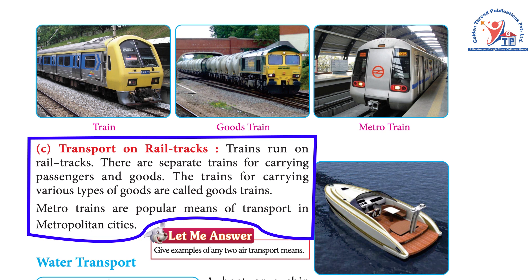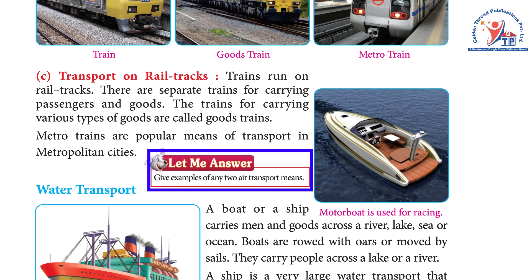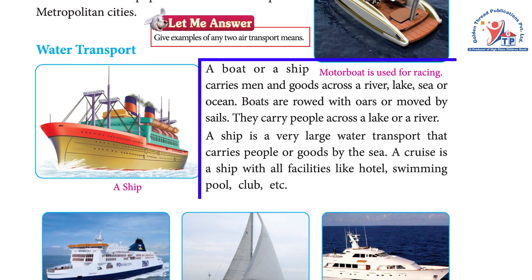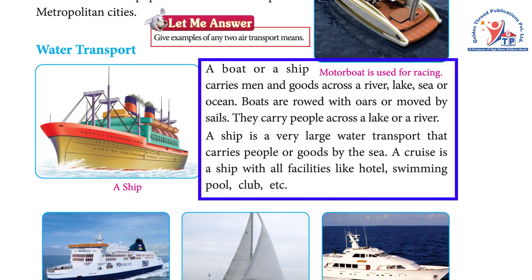Water transport: a boat or a ship carries men and goods across a river, lake, sea, or ocean. Boats are rowed with oars or moved by sails. They carry people across a lake or a river. A ship is a very large water transport that carries people or goods by the sea.